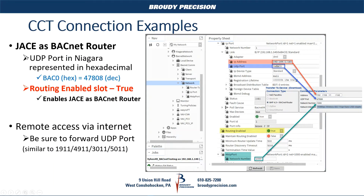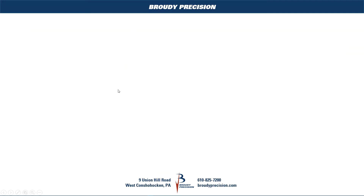If you're going through a JACE, first make sure routing is enabled on the JACE. There is a slot for that under the network settings of your BACnet network, as shown in the property sheet screenshot. You also need the IP address of the IP port being used on your JACE. We're using the standard UDP port — the number may appear in hexadecimal format, which translates to 47808 in decimal. Then go under the MSTP port to get the network number; in our case it's 1000. Enter 1000 and then the network interface you're using to connect to the JACE.